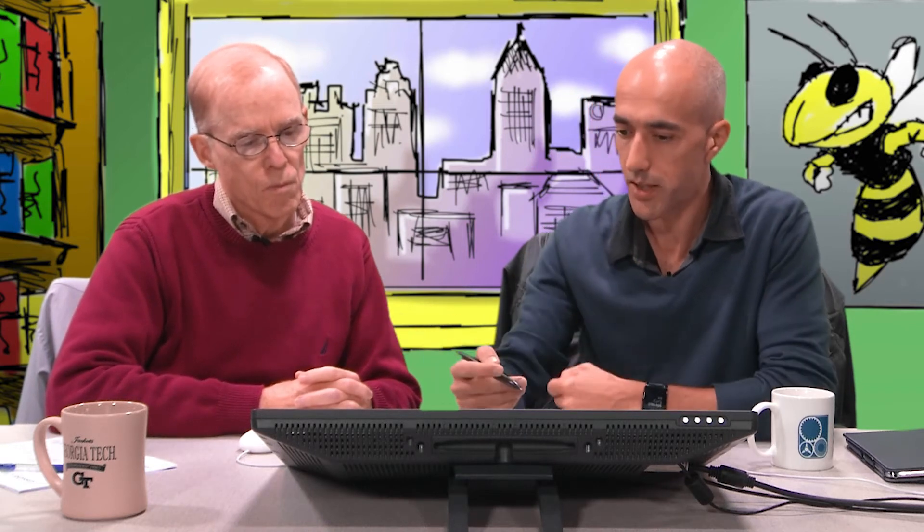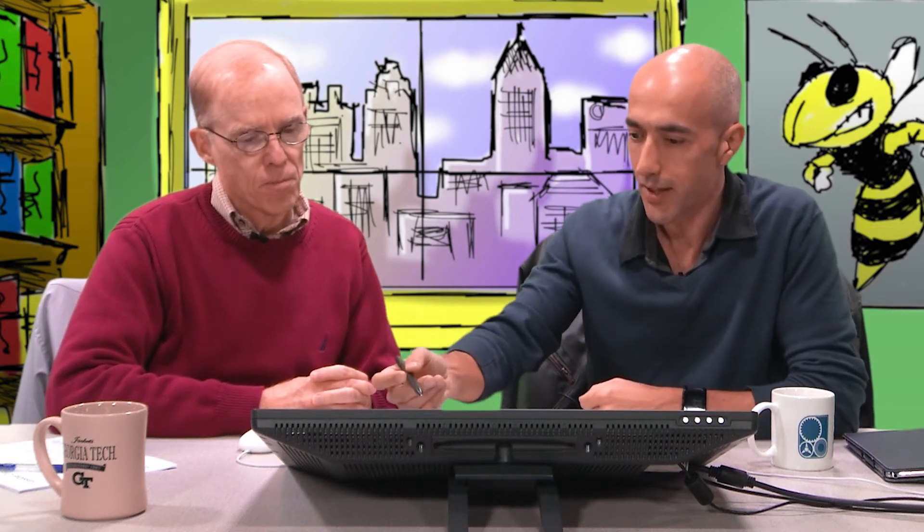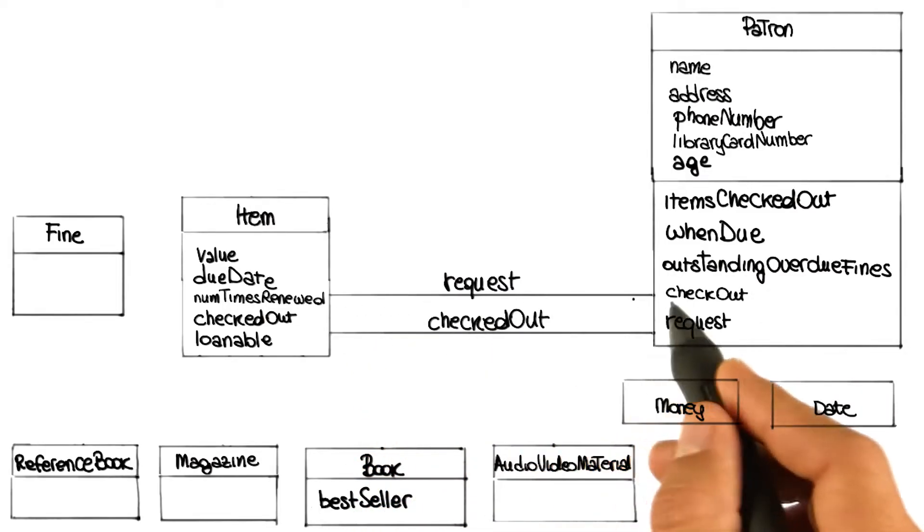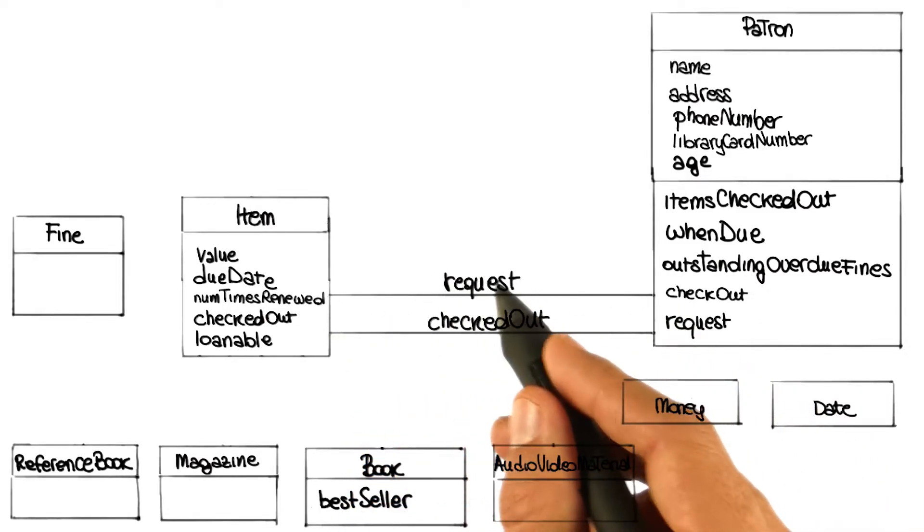Since we started talking about relationships and associations, is there any other kind of relationship that you see here? What you just did with checkout seems similar to the whole issue of requests. It is. A request is something else that happens in both the patron and the item — it involves both. So I will definitely represent this as an additional association. I'll draw another line between these two to represent that specific kind of relationship, and I will call it "request." That association also connects a patron with an item.